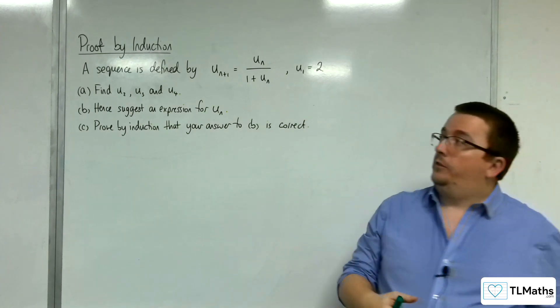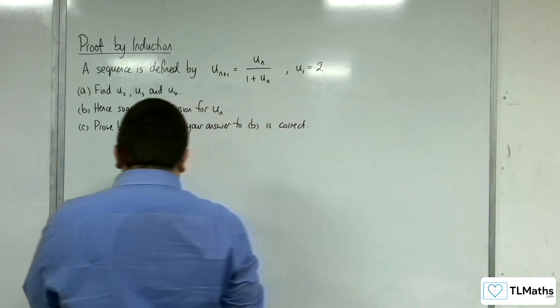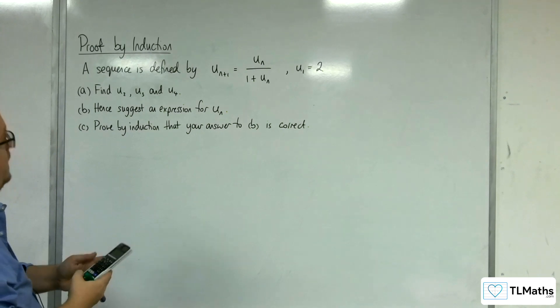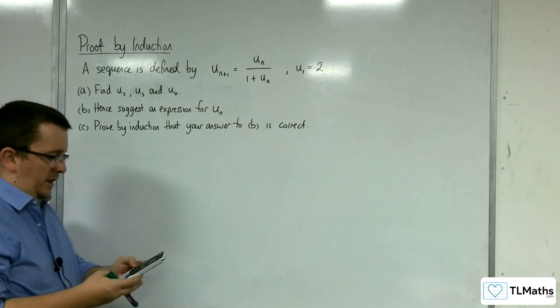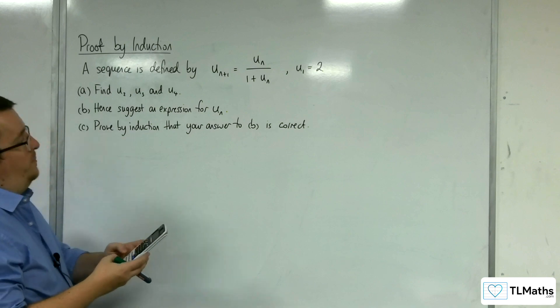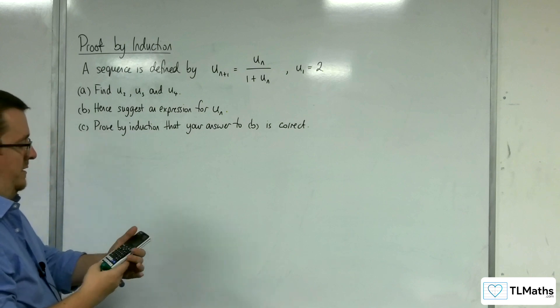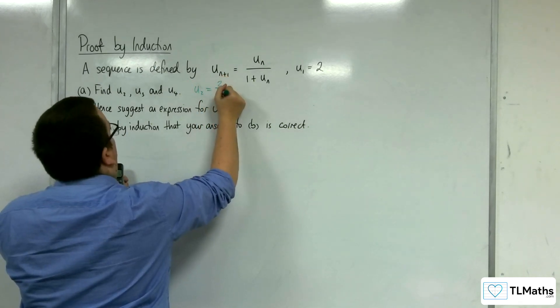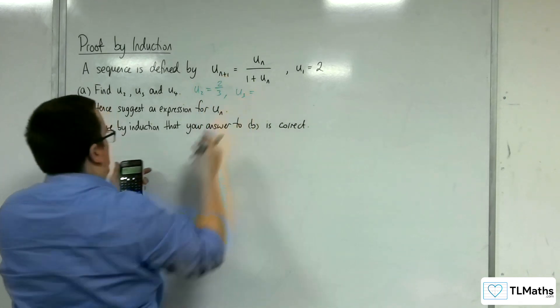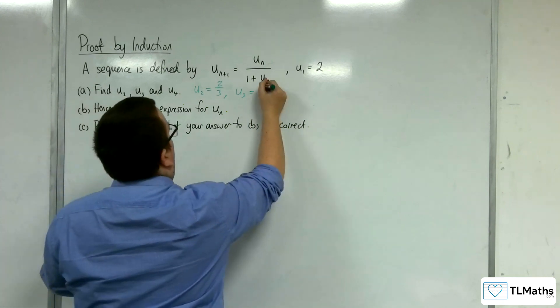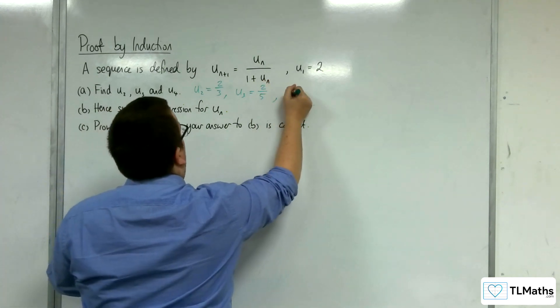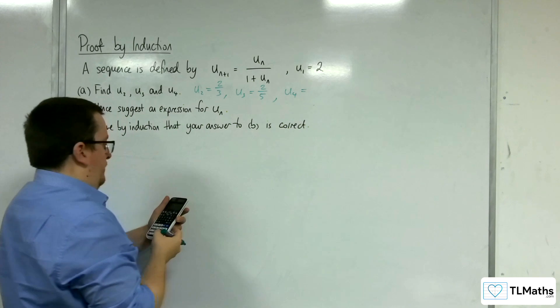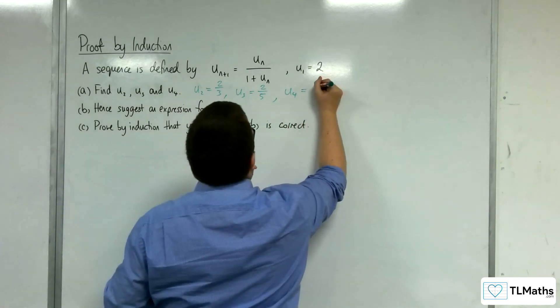So u(1) is 2. We want to find u(2). We're going to use the answer divided by 1 plus the answer. So u(2) is going to be 2 thirds, u(3) will be equal to 2 fifths, and u(4) will be equal to 2 sevenths.